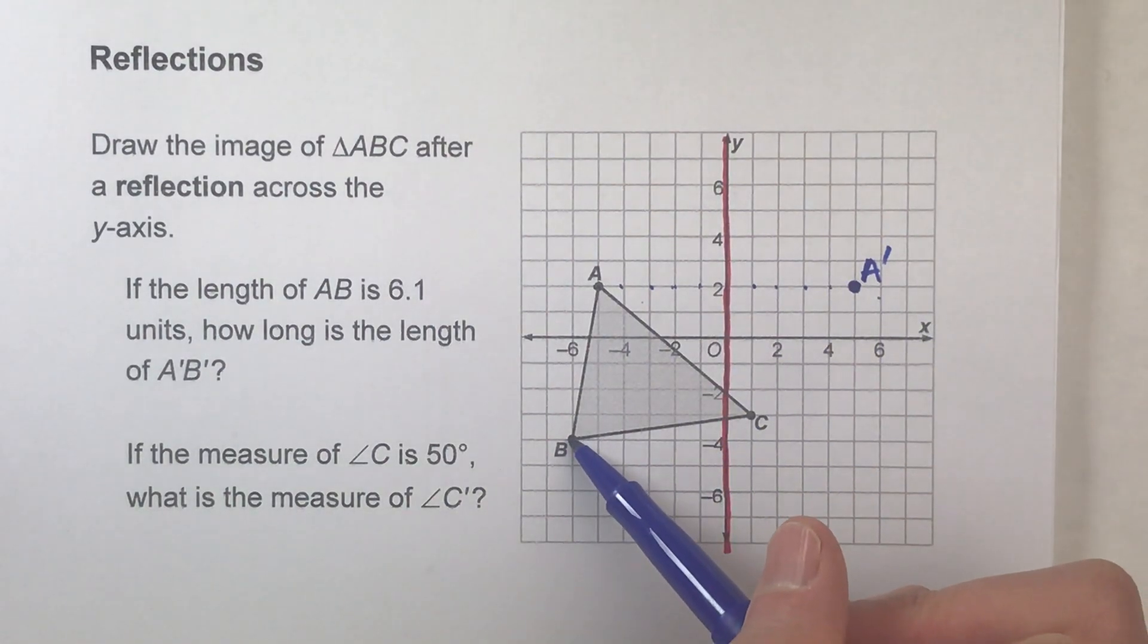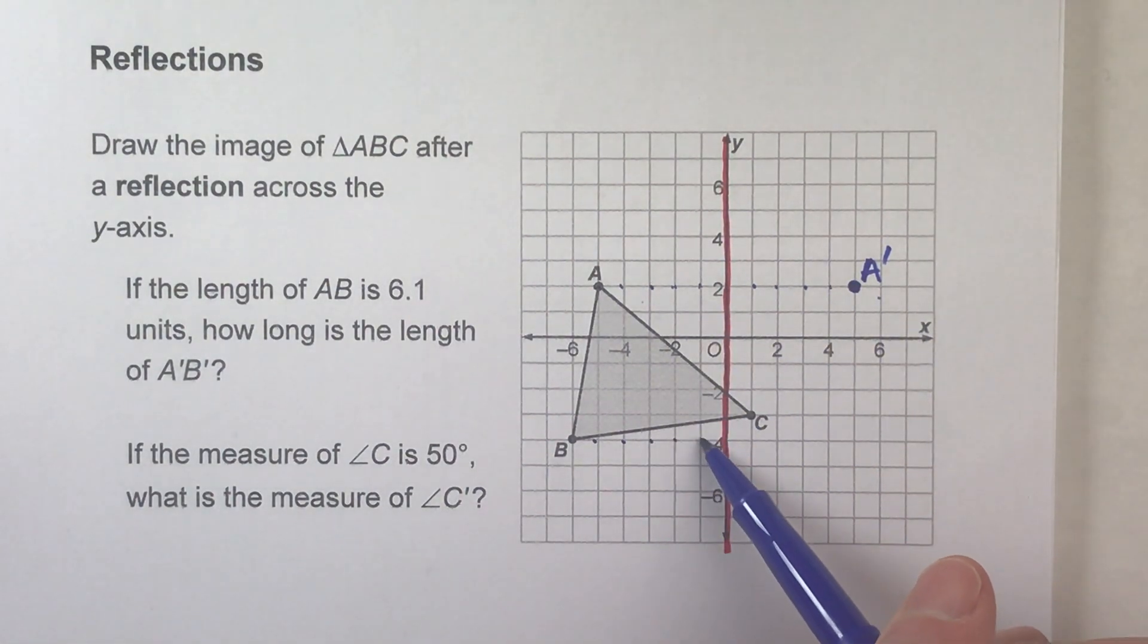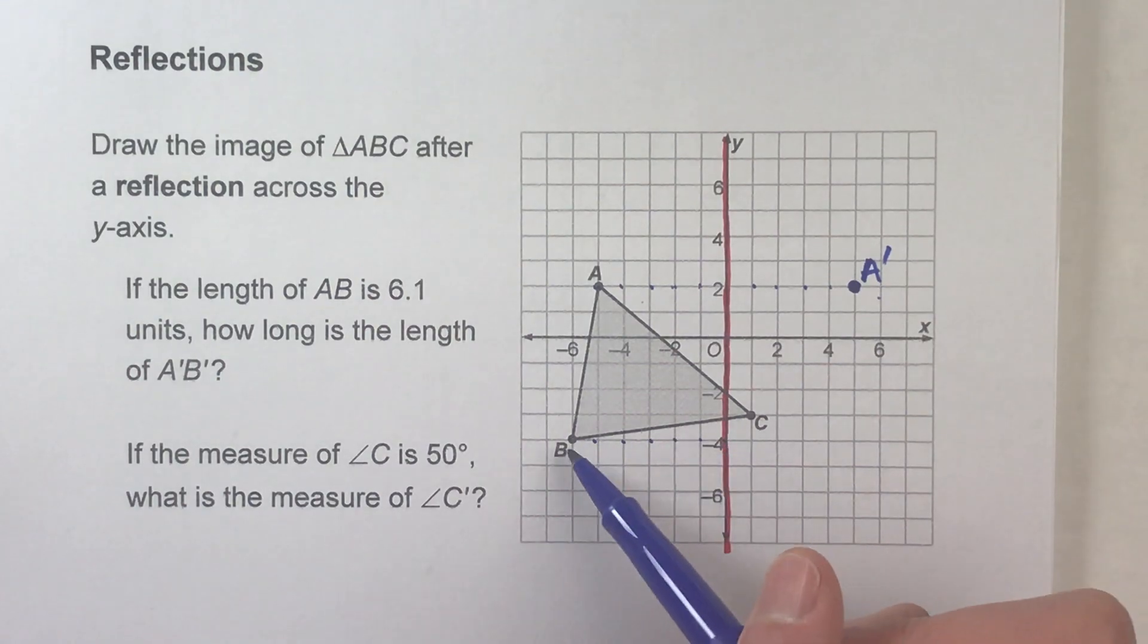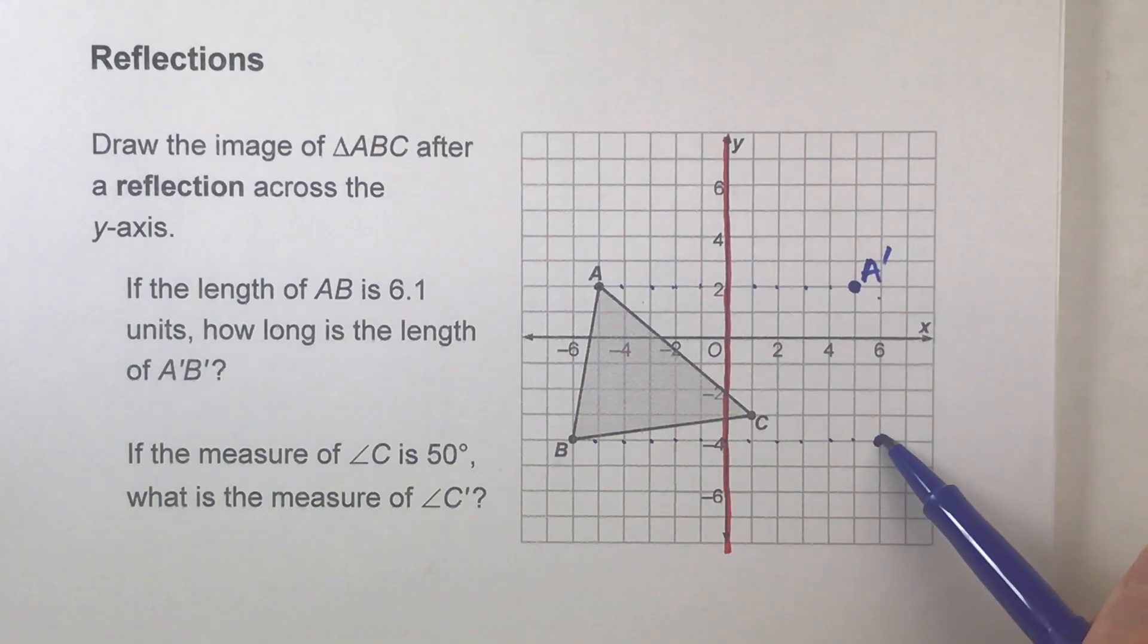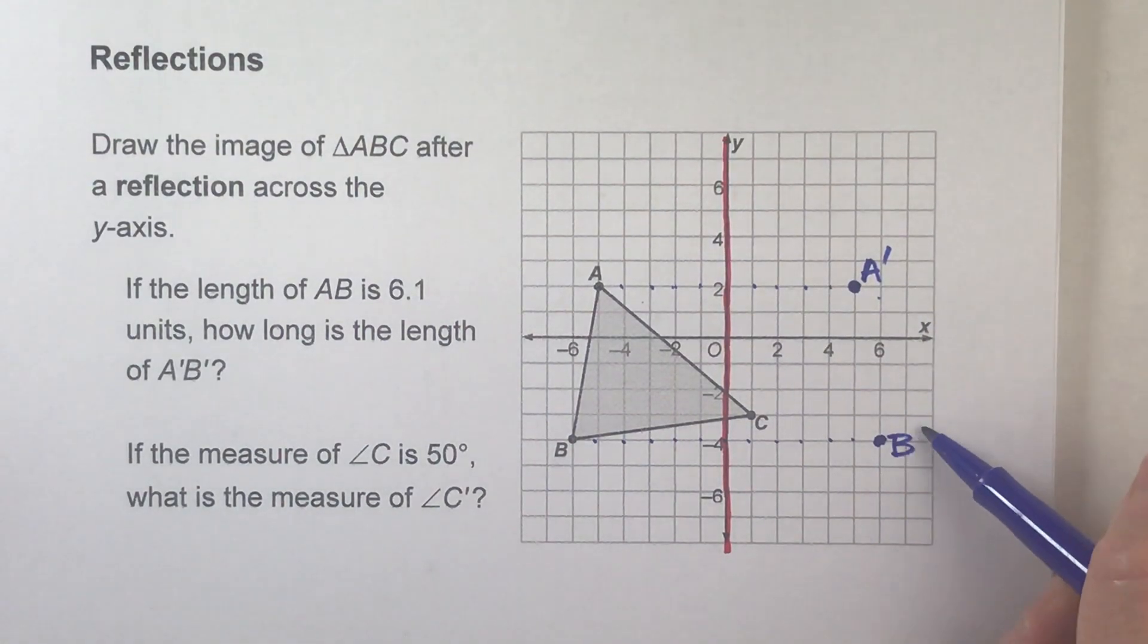Let's do another one, B. B is one, two, three, four, five, six steps away from the mirror on the left side. So its reflection is going to be one, two, three, four, five, six steps away from the mirror on the right side.